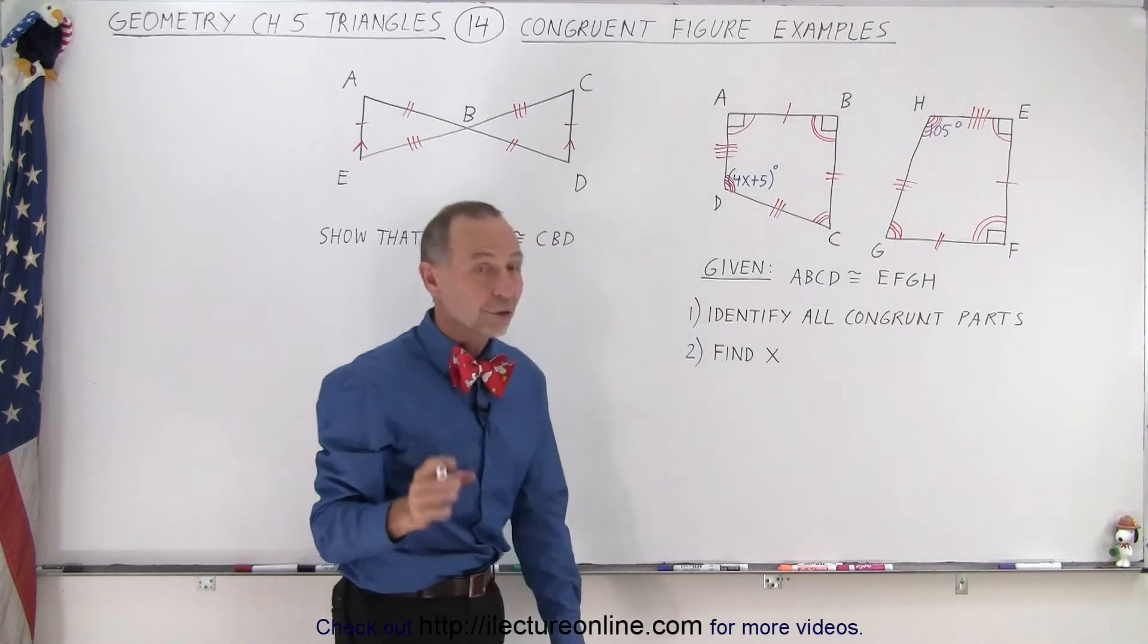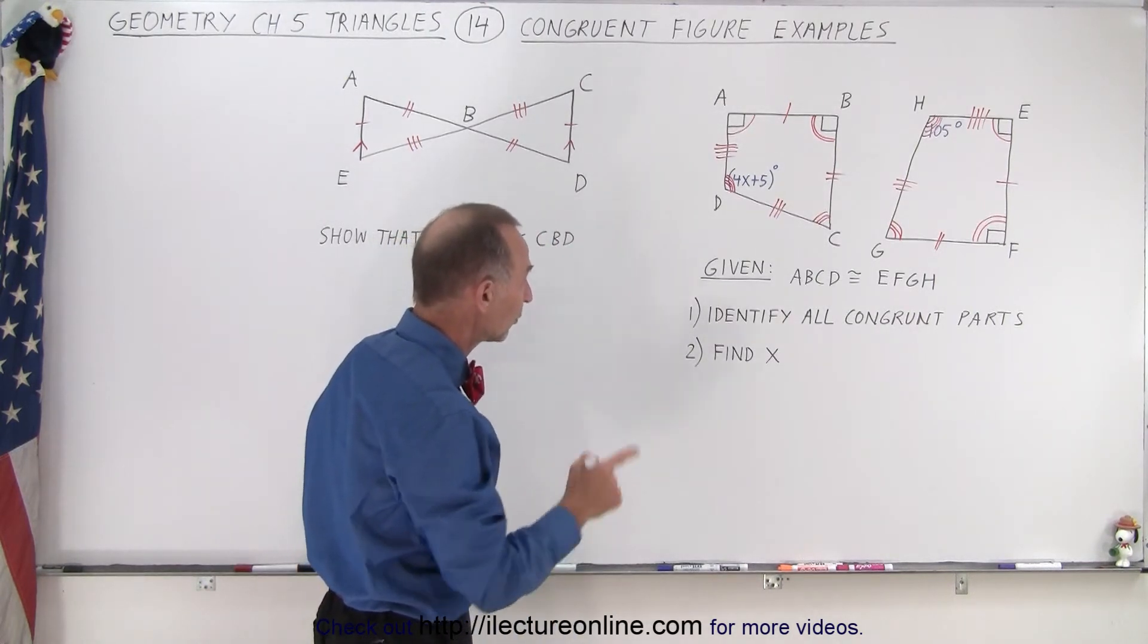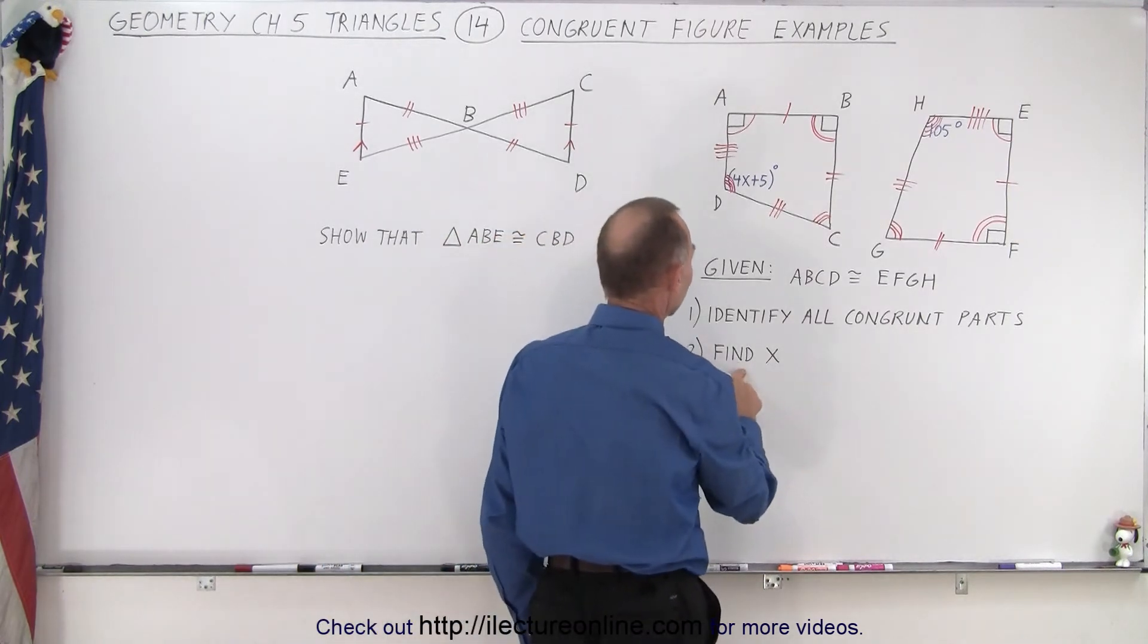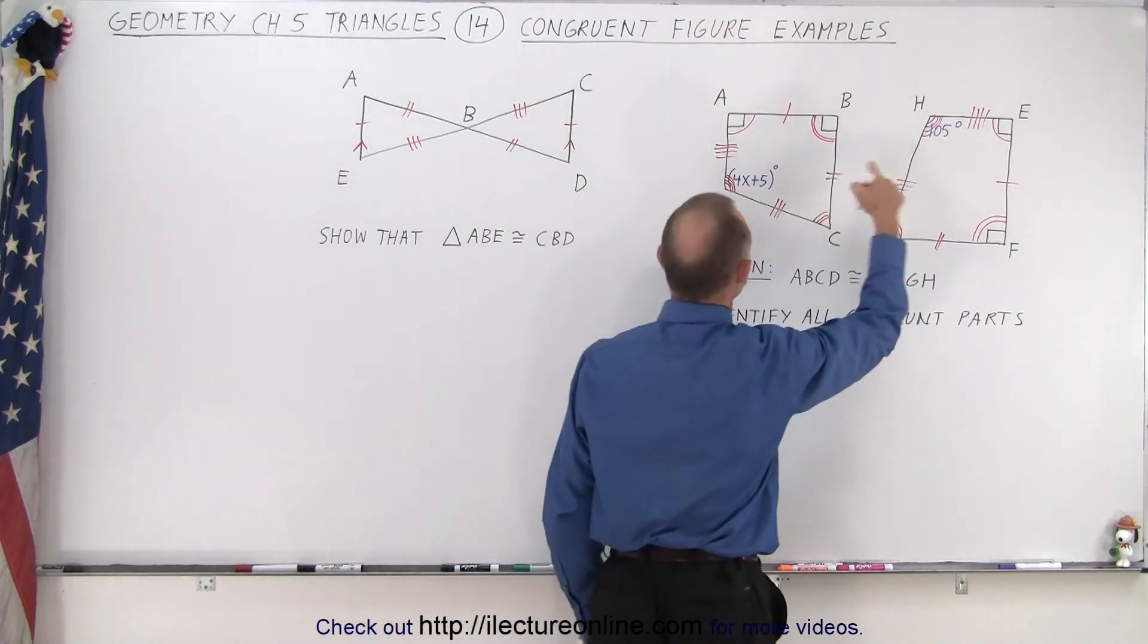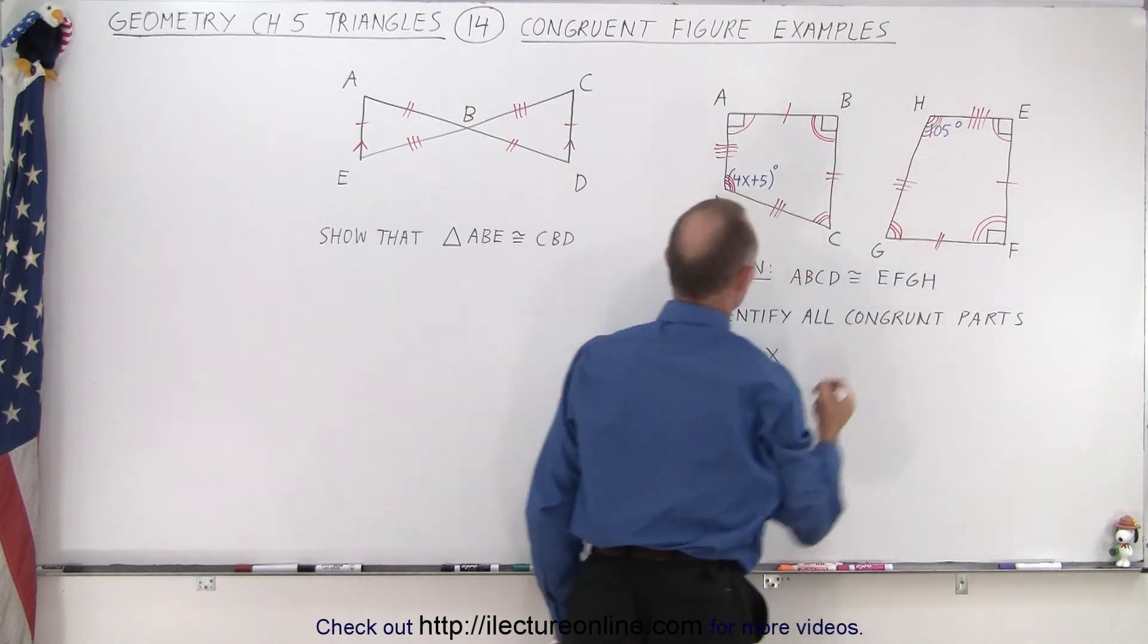So now that we've determined that, we've determined all the corresponding sides and all the corresponding angles, now what we can do is find the value for X. Because these angles right here, angle D, must have the same angular measure as angle H. So therefore, we can say that 4X plus 5 degrees must equal 105 degrees.